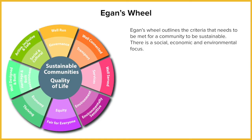I'm about to introduce to you Egan's Wheel. Egan's Wheel outlines the criteria that need to be met for any community — rural or urban — to be sustainable. If you look at the diagram, you can see it's split into wedges, and each wedge represents an element of sustainability.